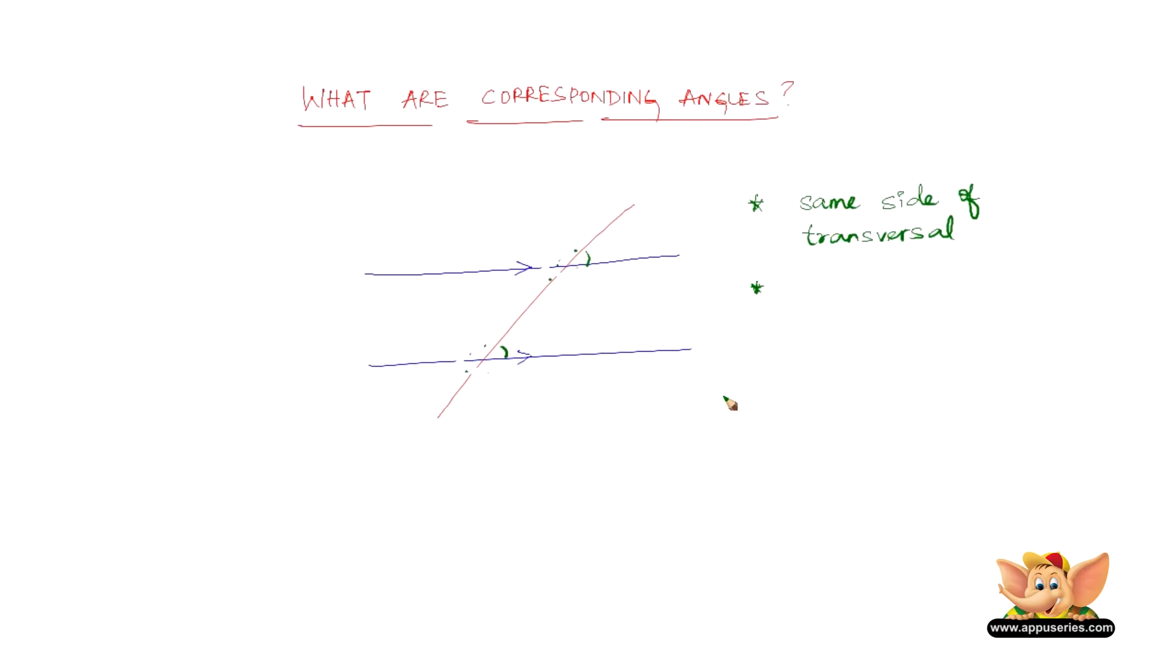Now one more thing that's very important is, it has to be either above the two lines that's being intersected, or below the two lines. So these two angles can be corresponding angles.